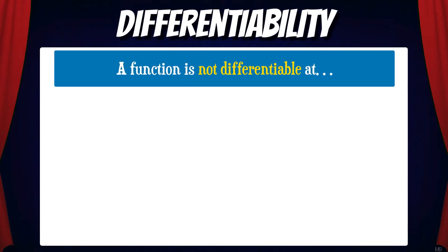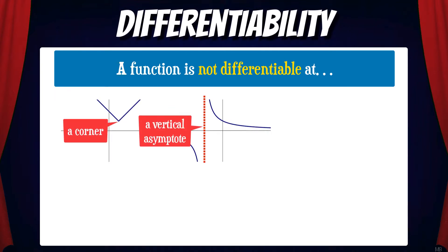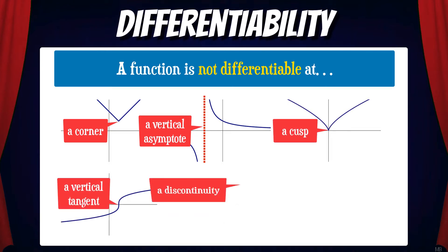Let's look at some examples of where a function is not differentiable. A function is not differentiable at a corner, a vertical asymptote, a cusp, a vertical tangent, a discontinuity, or at an endpoint.